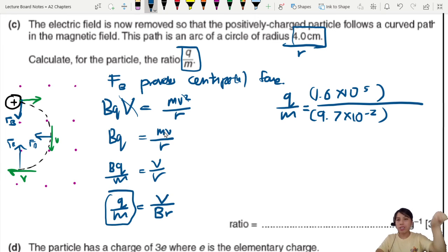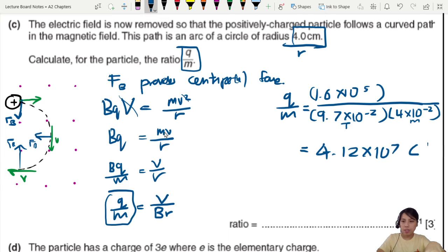Let's calculate what this ratio is. What's the V? Speed of the particle, still the same speed, right? So we can still use our same entrance speed, 1.6 times 10^5 meters per second. What is the magnetic flux density? Same one as before, 9.7 times 10^-2. And lastly, radius. This is new piece of information, radius of curved path 4 cm. So you put 4 times 10^-2.